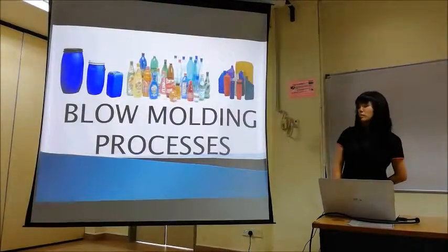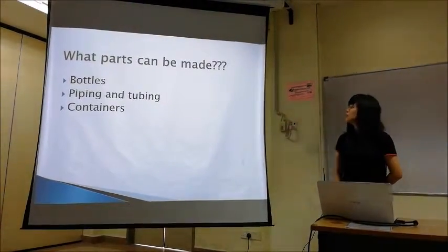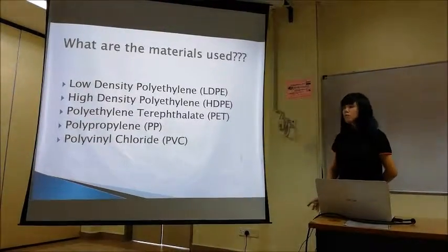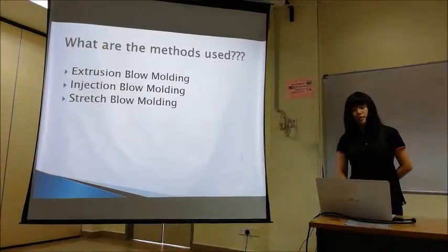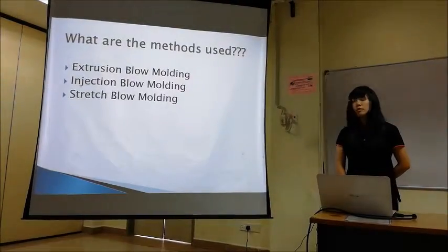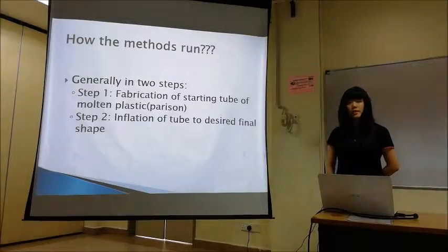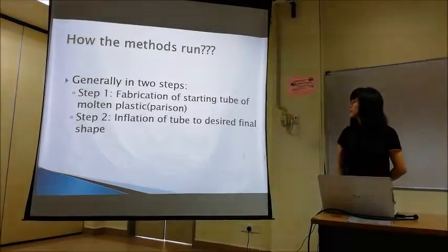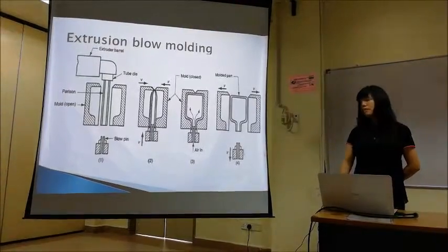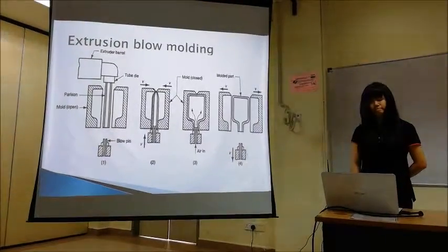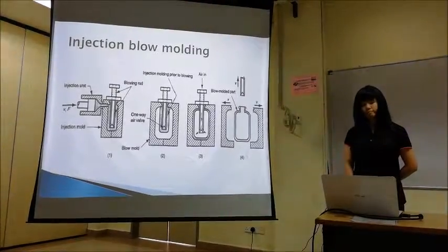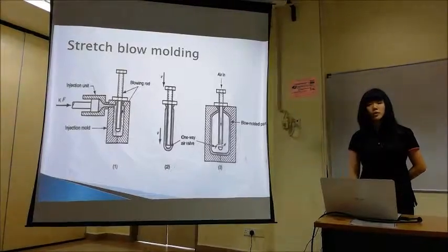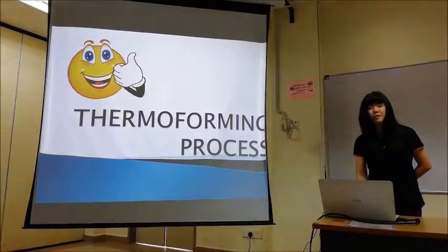Next, I am going to introduce the blow molding process. For blow molding, the parts that can be made include bottles, piping and tubing, and containers. The methods used in blow molding are extrusion blow molding, injection blow molding, and stretch blow molding. All blow molding processes are generally run in two steps: first, the fabrication of a starting tube of molten plastic, also known as the parison; and second, the inflation of the tube to the desired final shape. In the stretch blow molding process, the final product is stretched in order to form the final shape. Thank you.